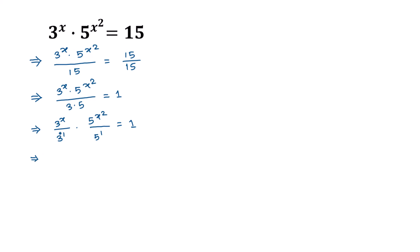Applying the exponential formula, 3 to the power x divided by 3 to the power 1 can be written as 3 to the power (x minus 1). Similarly, 5 to the power x squared divided by 5 to the power 1 can be written as 5 to the power (x squared minus 1). This is equal to 1.